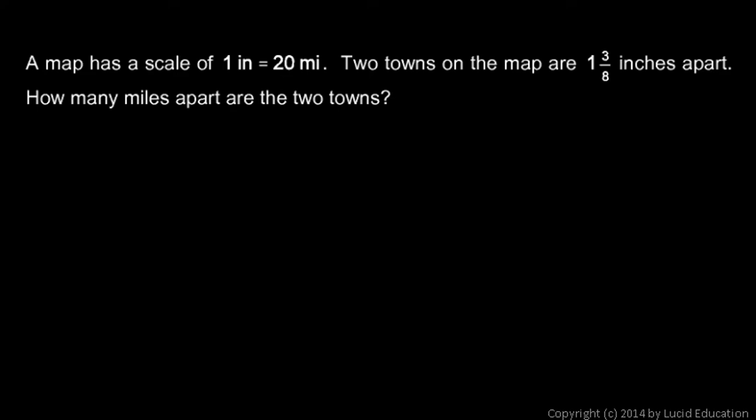A map has a scale of 1 inch equals 20 miles. That's obviously not true for every map, but in this particular problem, we're told that a map has a scale of 1 inch equals 20 miles. That means 1 inch on the map corresponds to 20 miles in the real world. Two towns on the map are 1 and 3 eighths inches apart. So how many miles apart in reality are the two towns?